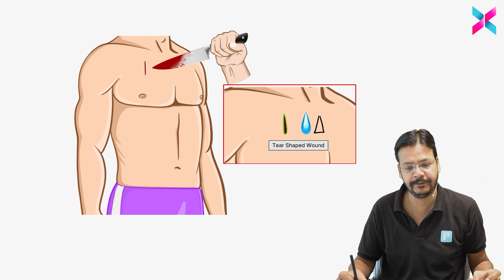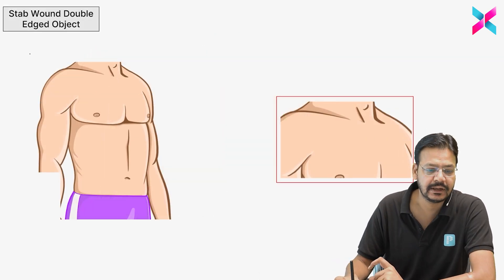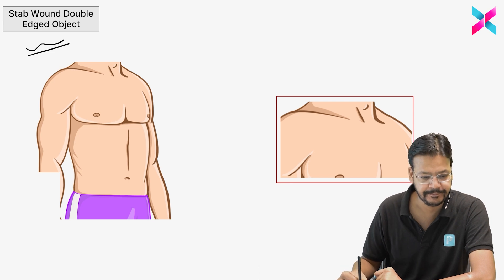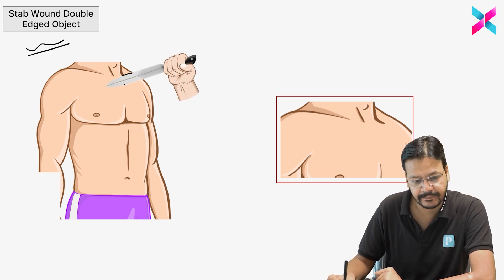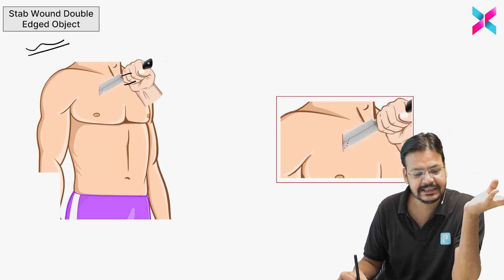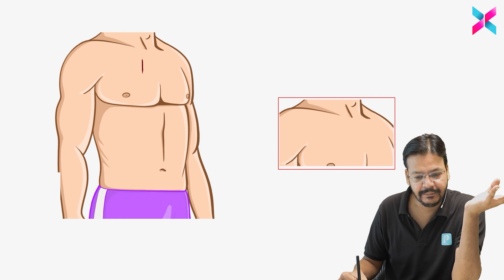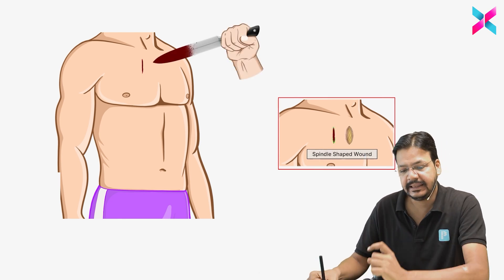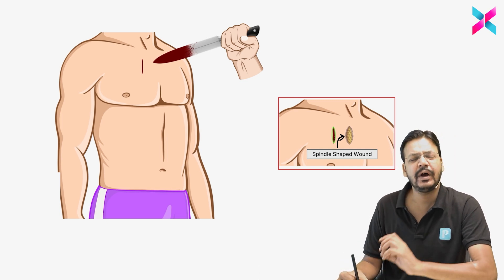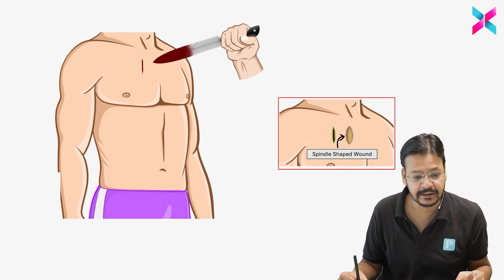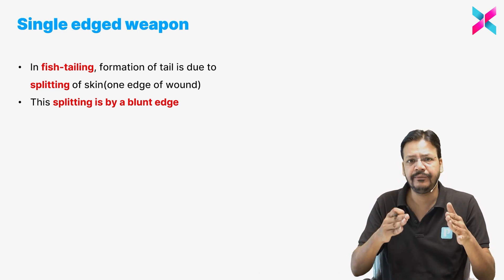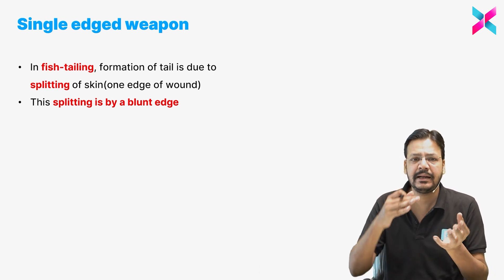If the same question involves a double-edge weapon, both edges are sharp. You can see when it enters, it will make both angles acute, and the wound will be spindle-shaped. So the shape of the wound depends on whether it's a single-edge or double-edge weapon. In a single-edge weapon, only one side is acute; in a double-edge weapon, both sides are acute, giving a spindle or oval shape.